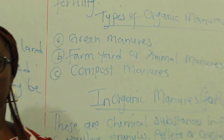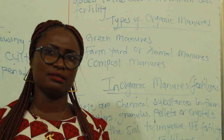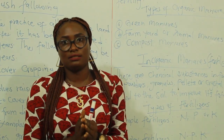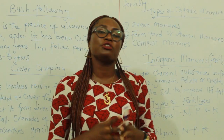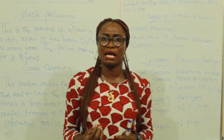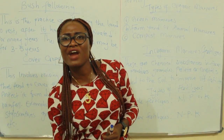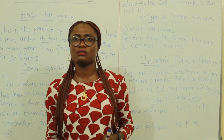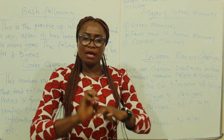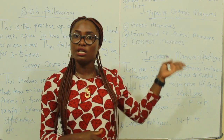Let me explain green manures. Green manures are fresh grasses that are cut and then allowed to ferment, and then later added to the soil to improve soil fertility. The plants that are cut are usually succulent plants — those little green plants that are still very small when they start growing. The farmer cuts them while they are young, places them on the soil in his farm, allows them to decay, and then they form a green manure.